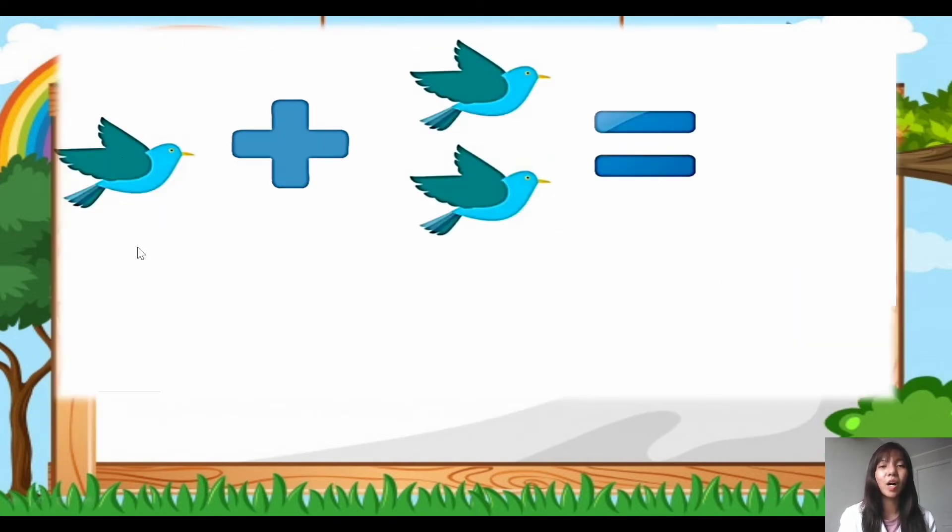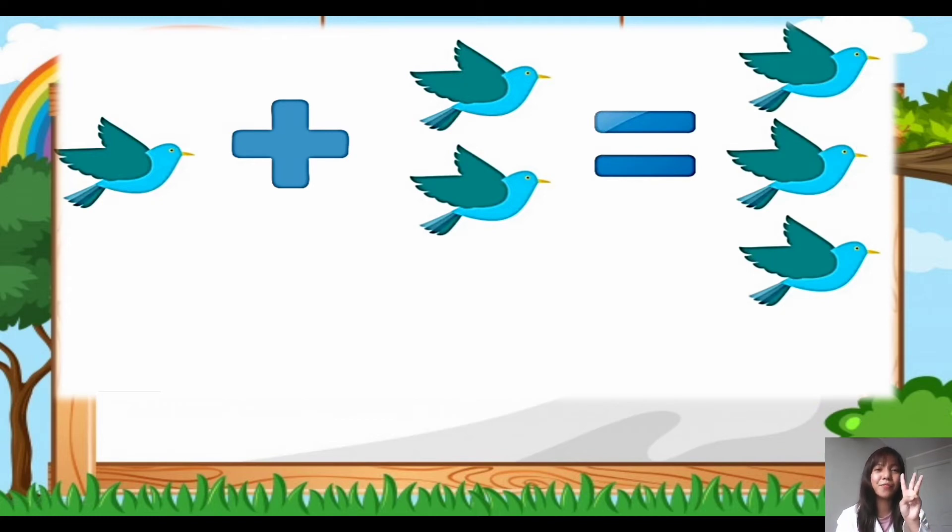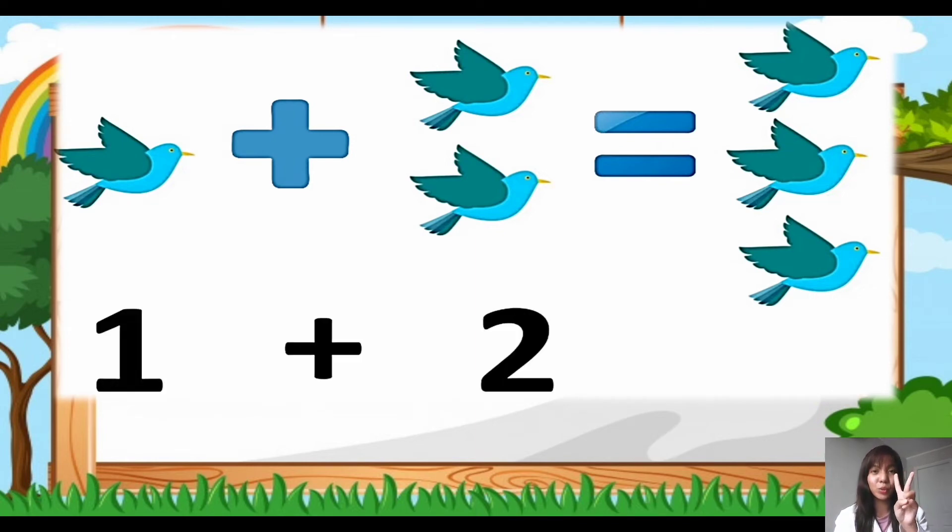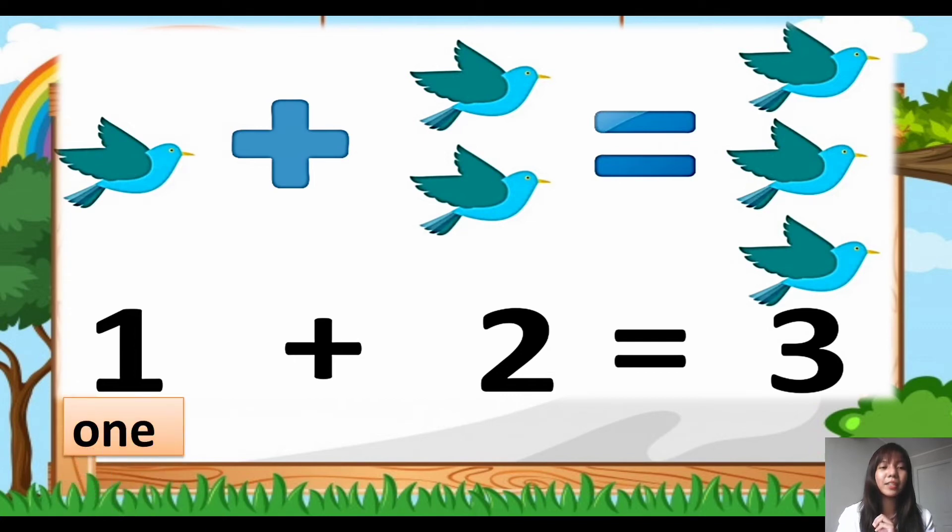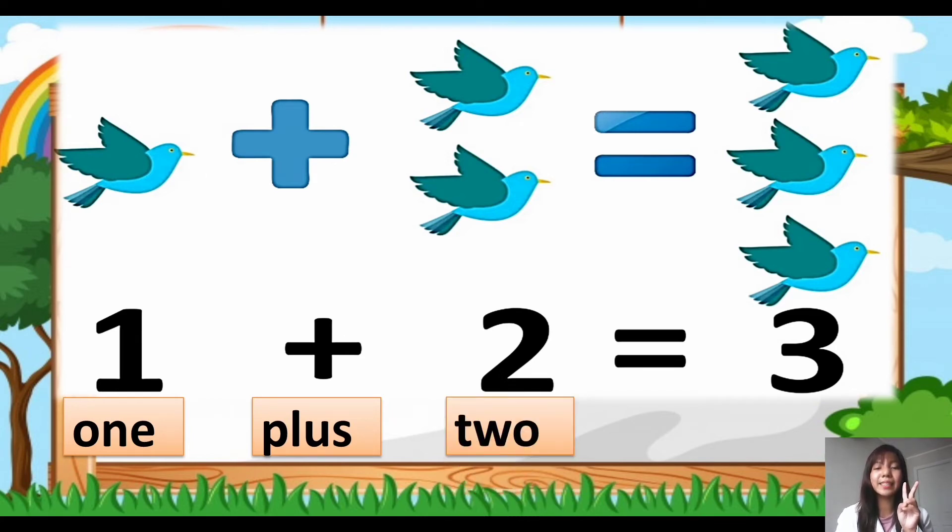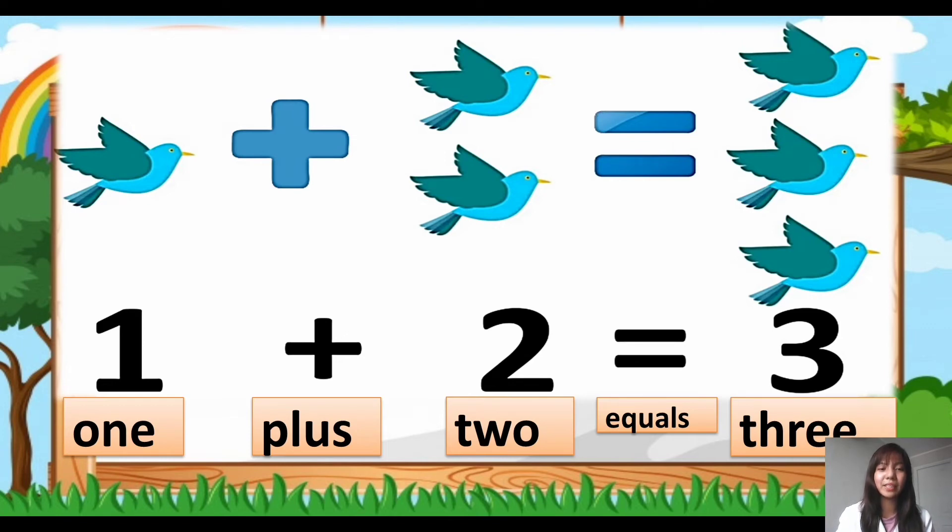Next. How many birds? We have here 1 bird plus 2. How many in all? What is the sum? The sum is 3. We have 3 birds in all. So the symbol: 1 + 2 = 3. The word: one, O-N-E, plus, P-L-U-S, 2, T-W-O, equals, E-Q-U-A-L-S, 3, T-H-R-E-E. So again, 1 + 2 = 3.